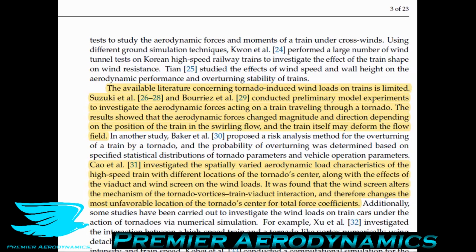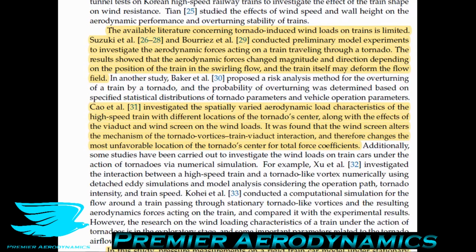The available literature concerning tornado-induced wind loads on trains is limited. Some researchers conducted preliminary model experiments to investigate the aerodynamic forces acting on a train traveling through a tornado. The results showed that aerodynamic forces changed magnitude and direction depending on the position of the train in the swirling flow, and the train itself may deform the flow field. Other researchers investigated the spatially varied aerodynamic load characteristics of high-speed trains with different tornado center locations, along with the effects of viaducts and windscreens on wind loads. The windscreen was found to alter the mechanism of tornado-vortex-train-viaduct interaction.